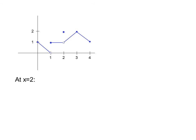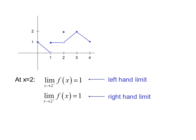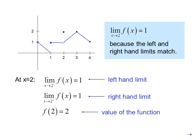At x equals 2: the limit as x approaches 2 from the left of f of x equals 1, and the limit as x approaches 2 from the right of f of x also equals 1. Approaching from either side, the y value approaches 1. The value of the function is 2, but we're looking for limits, so we don't care. Since the left-hand and right-hand limits match, the limit as x approaches 2 of f of x equals 1.